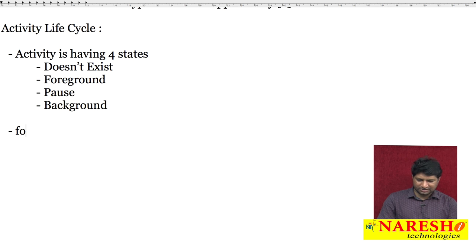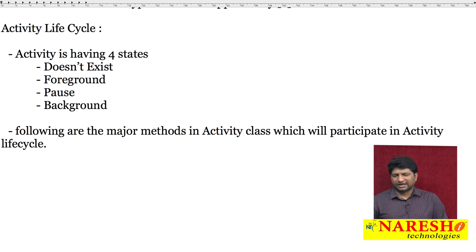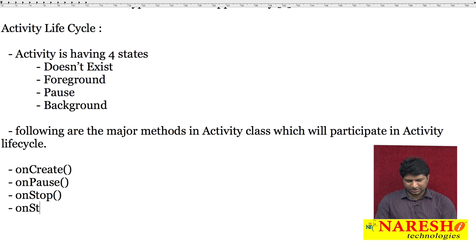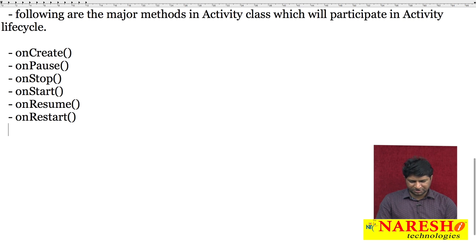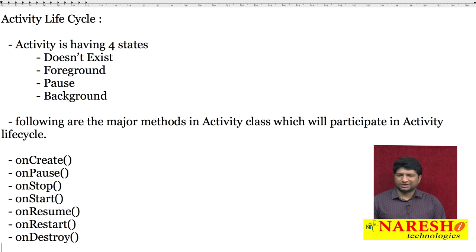There are seven major methods in the Activity class which will participate in the activity life cycle. There are many methods in the Activity class but not all participate in the life cycle. The seven methods are: onCreate, onPause, onStop, onStart, onResume, onRestart, and onDestroy. Only these seven methods participate in the activity life cycle.